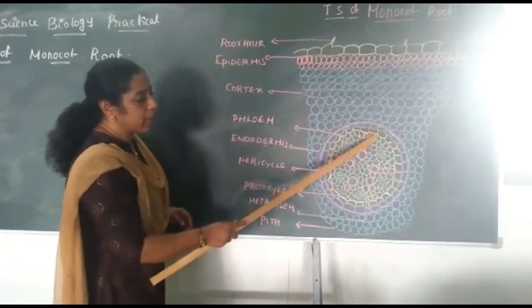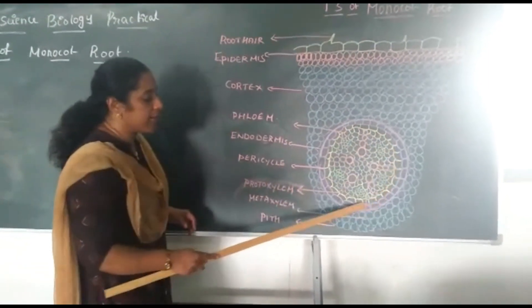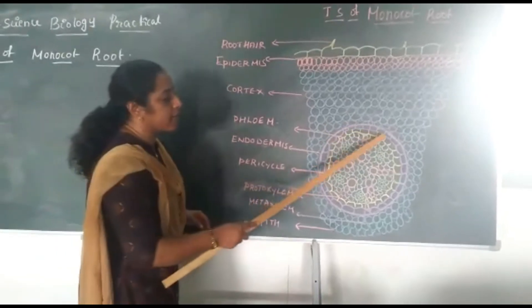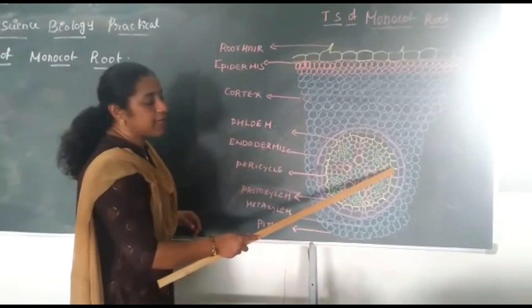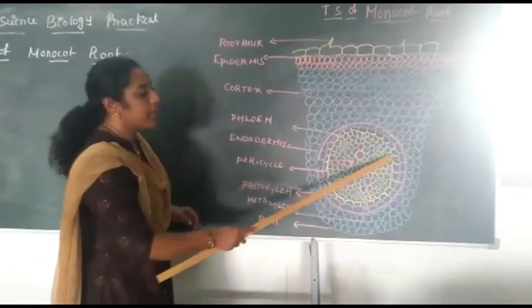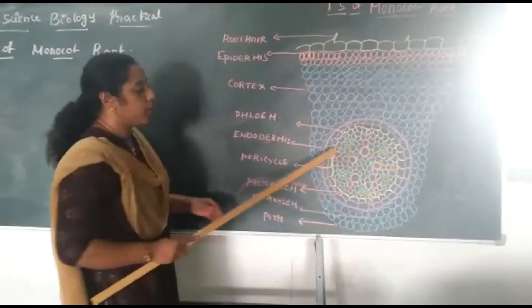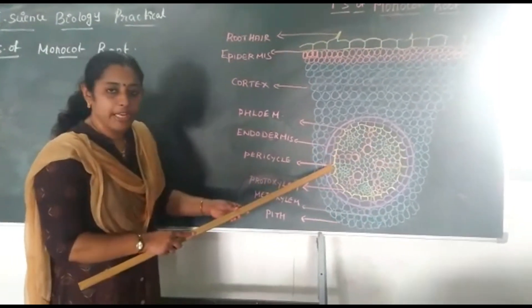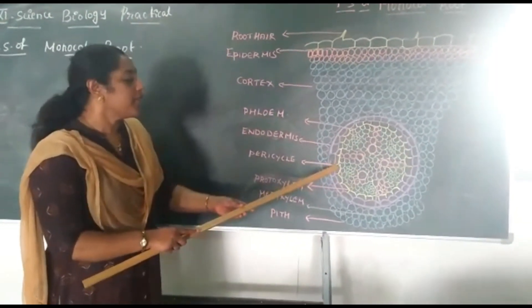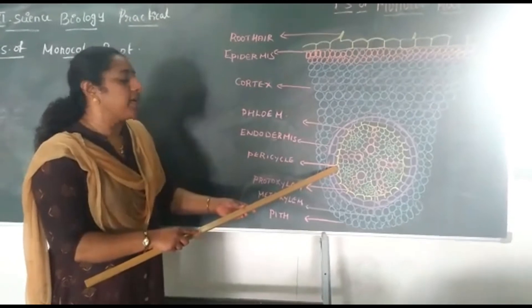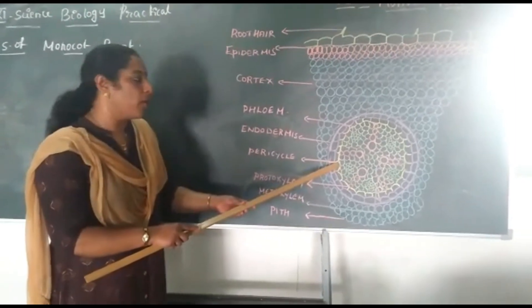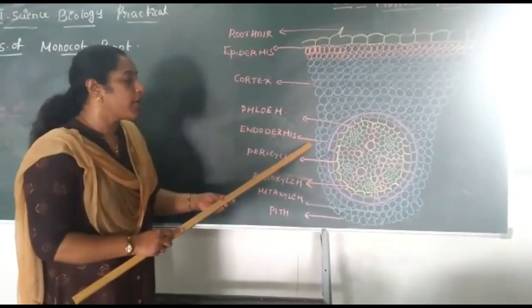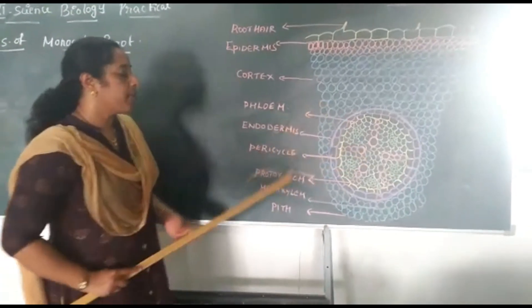Below the Endodermis you can find a layer called Pericycle, represented in yellow color. This Pericycle allows the passage of substances from cortex to the Pith region.